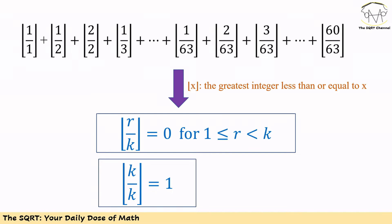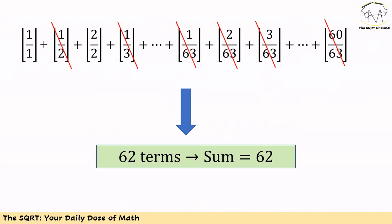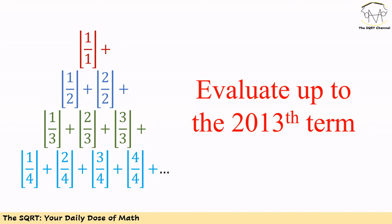Recall that floor of X is the greatest integer less than or equal to X. So floor of K over K equals 1, and floor of R over K for R less than K and R greater than or equal to 1 equals 0. Many of these terms are just zero and others are one. In total we have 62 terms with value one, so the sum is 62 — that's our answer.